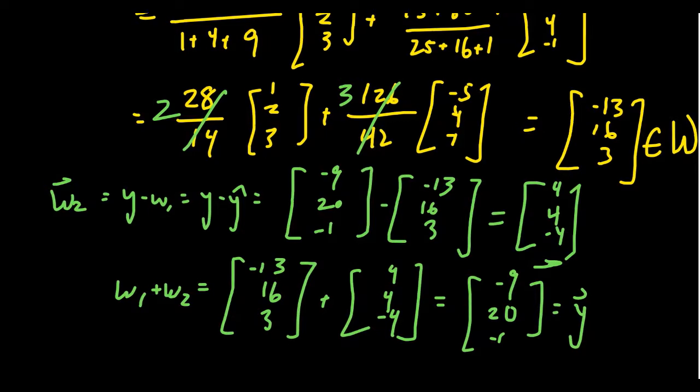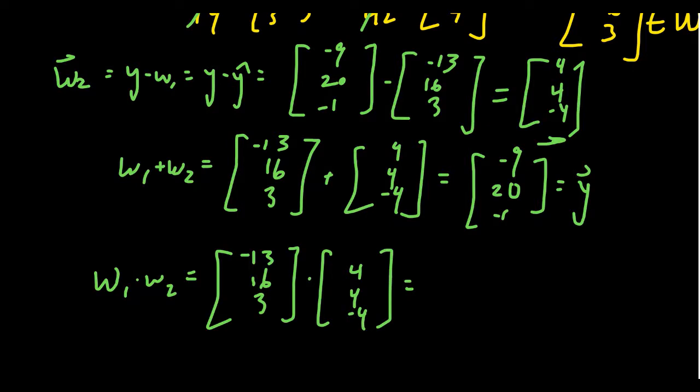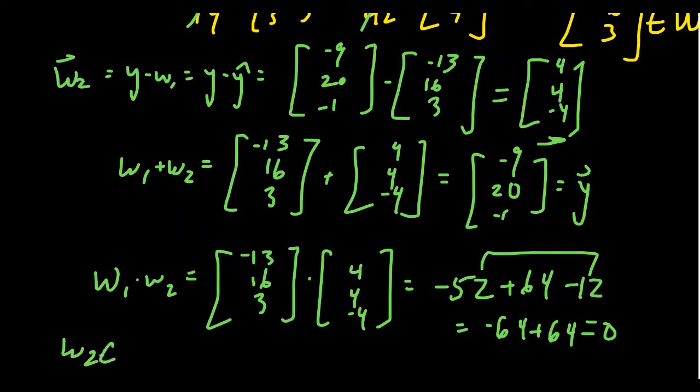But this is the important part. So we found a vector in W which adds to another vector to give you y. Is w2 in the orthogonal complement? To prove that, we're going to compute the dot product of w1 and w2. So we're going to take [-13, 16, 3] and we're going to dot it with [4, 4, -4]. So negative 13 times 4 is negative 52, 16 times 4 is 64, and 3 times negative 4 is negative 12. Which you can see, combined 52 and 12, you're going to get negative 64 plus 64, which gives you 0. Thus, in fact, we see that w2 belongs to W perp, like we thought it would. And so we've then computed an orthogonal decomposition.